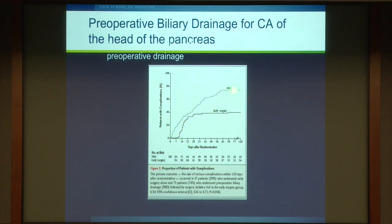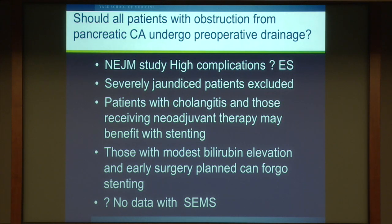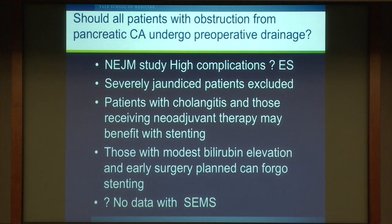This was very surprising to us — not consistent with our experience. Several caveats apply: the study had a very high complication rate partly because endoscopic sphincterotomy was carried out in most patients, which is unnecessary and increases bleeding risk. The study excluded severely jaundiced patients, who may be exactly the ones you want to drain. Patients at Yale receiving neoadjuvant therapy may benefit from stenting. Most agree that patients with modest bilirubin elevations and early surgery planned can forego stenting, and importantly there is no data using self-expanding metal stents — this was a plastic stent study, and results would likely be quite different.